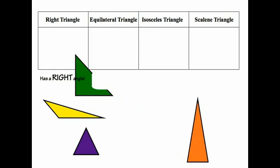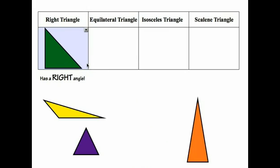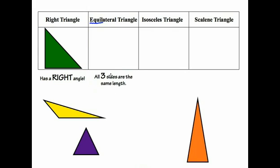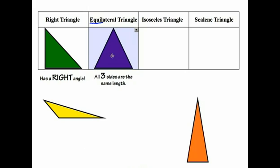So we know that this is a right triangle, and we're going to drop it into that box. Moving on to the equilateral triangle — the key is in the word 'equal,' which means equal. An equilateral triangle has all three sides the same length. Looking at the remaining three triangles, the one that fits this description would be our purple triangle, with all three sides the same.